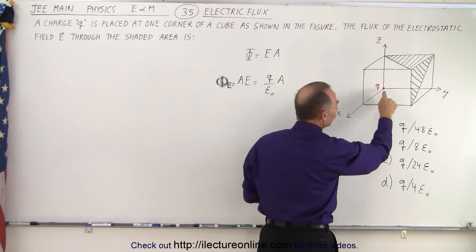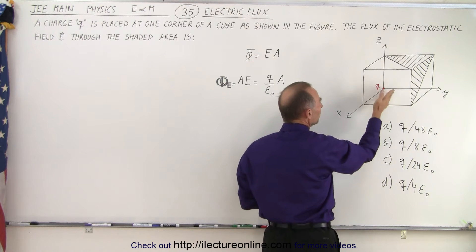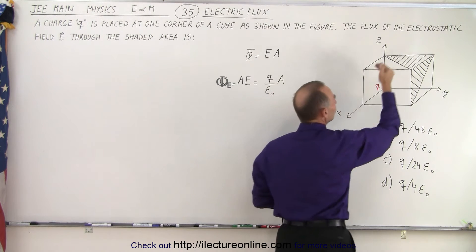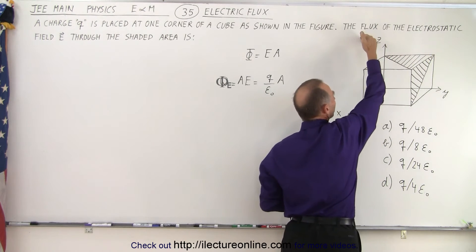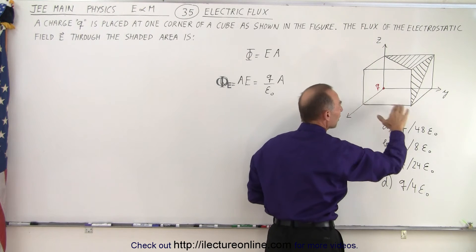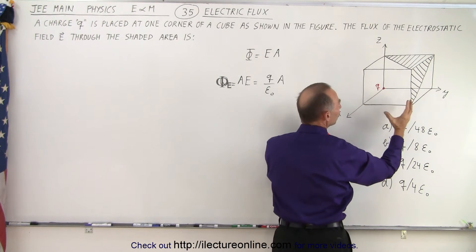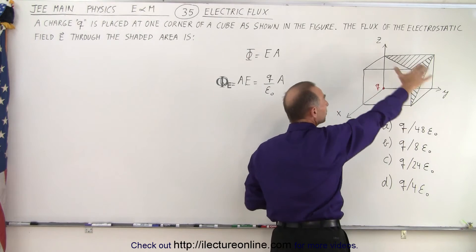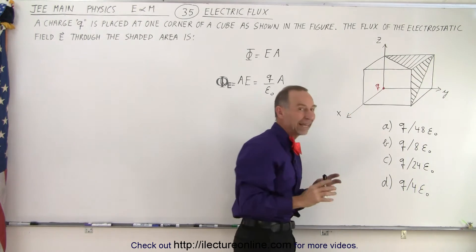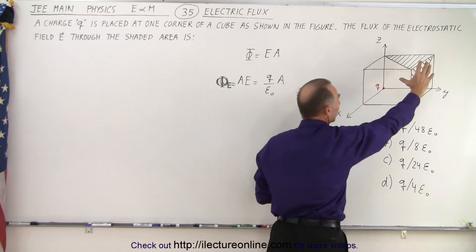Notice that this is just at the corner of a single cube. There would be another cube on this side, another cube on the back side, another cube on this side, and four more cubes on the bottom. If we want to envelope that charge by these cubes, there would be eight total cubes, and there's only one cube in consideration here.